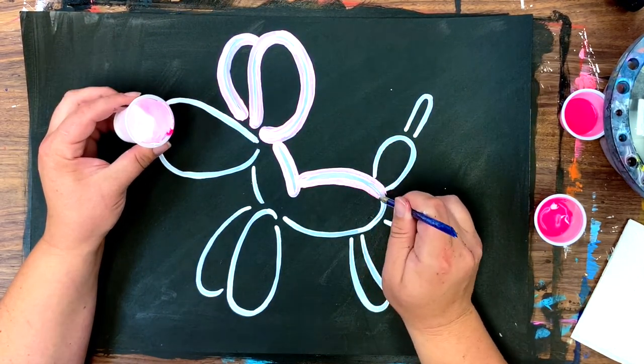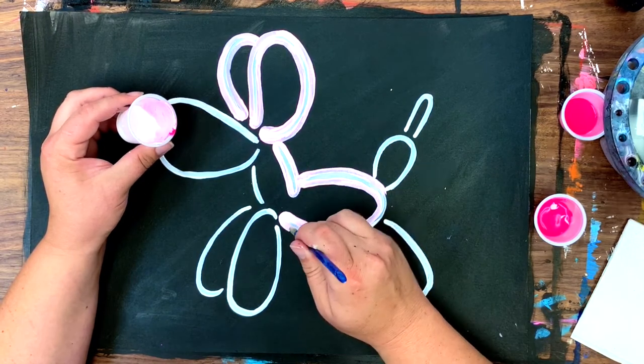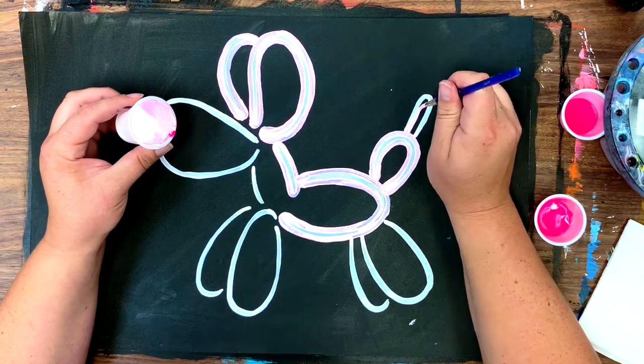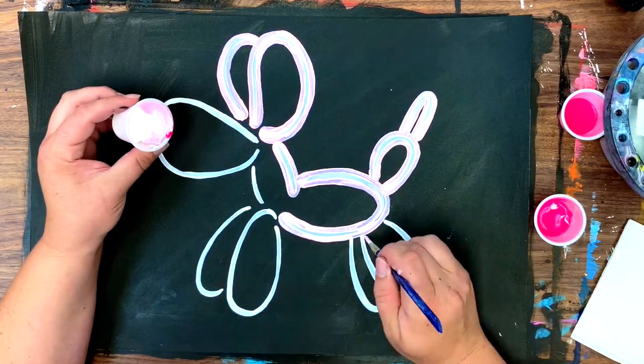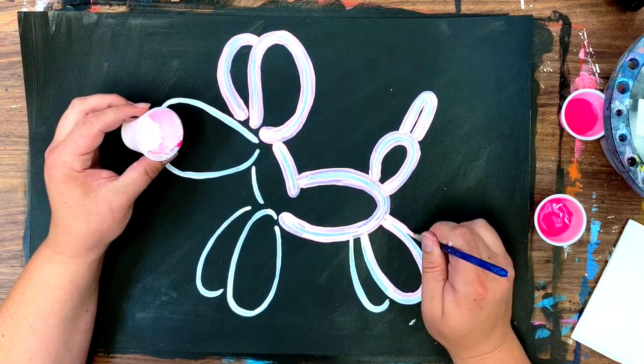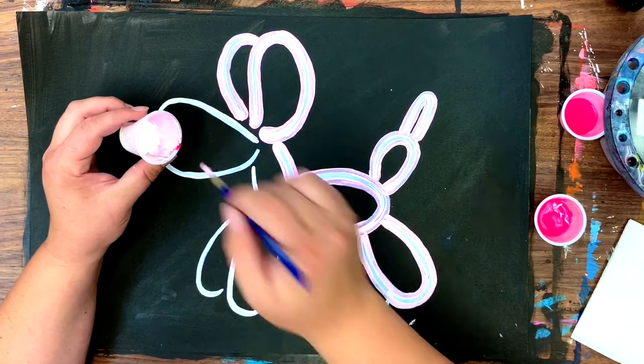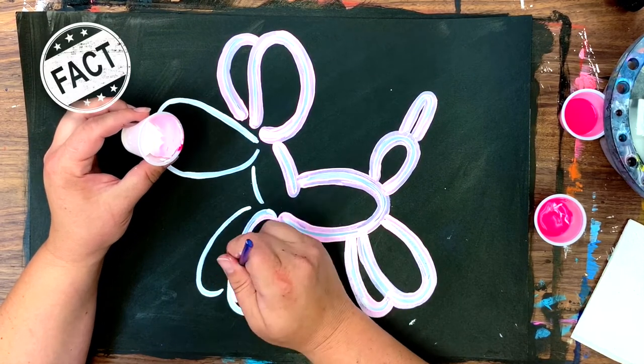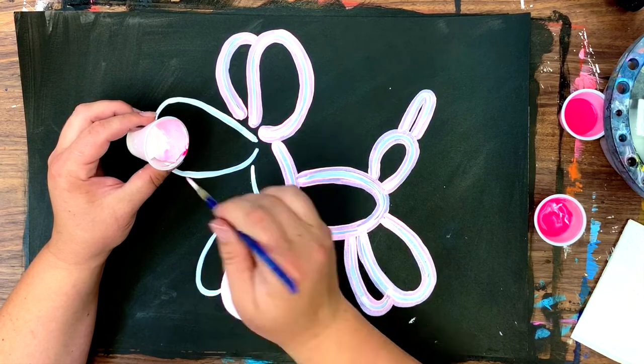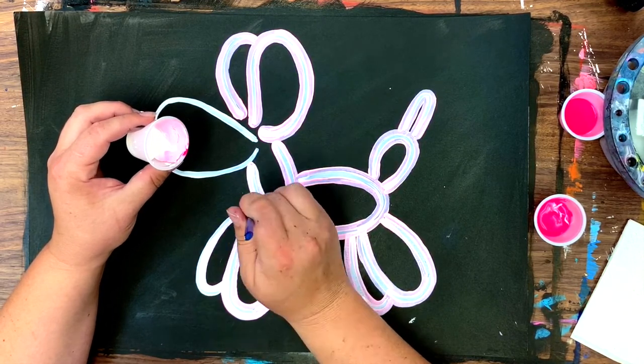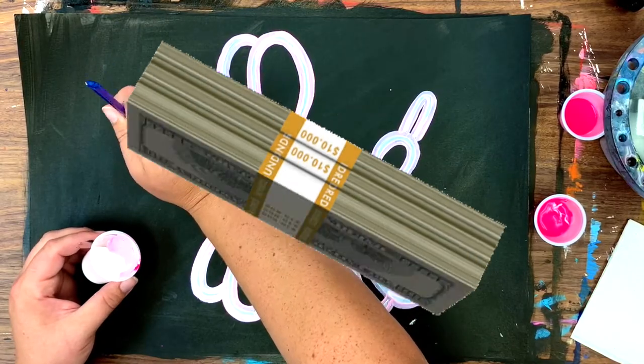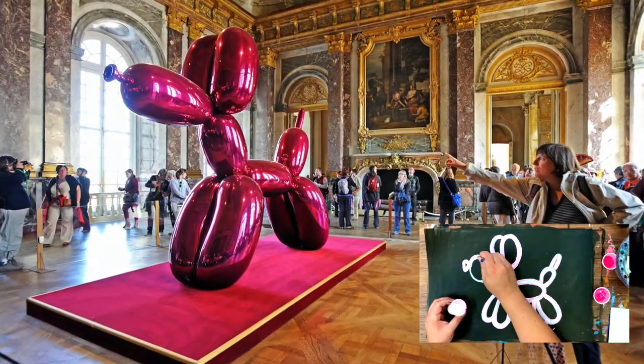Before he was known to be one of the highest paid living artists of all time he left his work selling stocks for First Investors Corporation. One of his most famous works is the one we're working on right now. His balloon dog sculpture it's sold for over 58 million dollars in 2008 and it's standing tall in a brilliant magenta color at the Palace of Versailles.